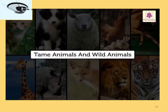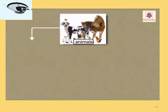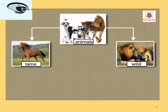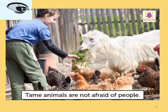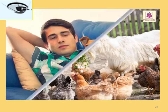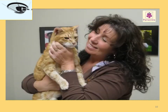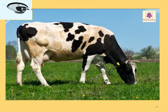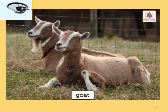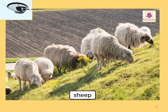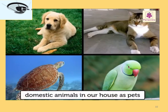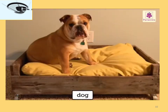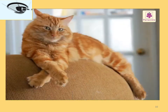Animals are either tame or wild. Tame animals are not afraid of people and are used to living with them — most of them are domestic animals. Domestic animals are animals which we keep on farms, like cow, buffalo, goat, sheep and horse, or in our houses as pets, like dog, cat and tortoise.